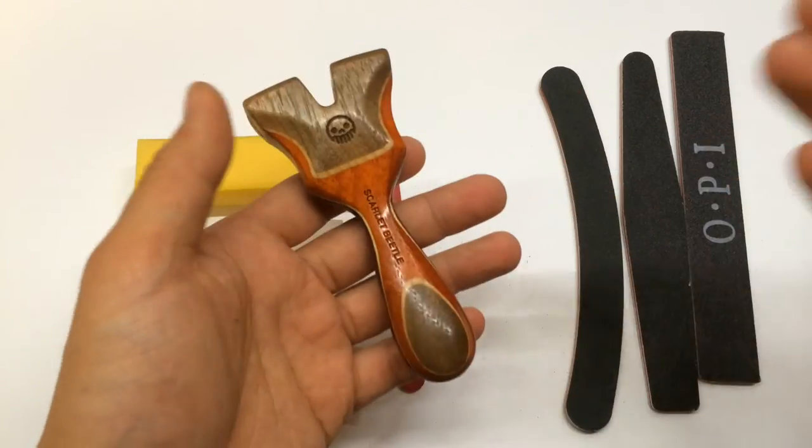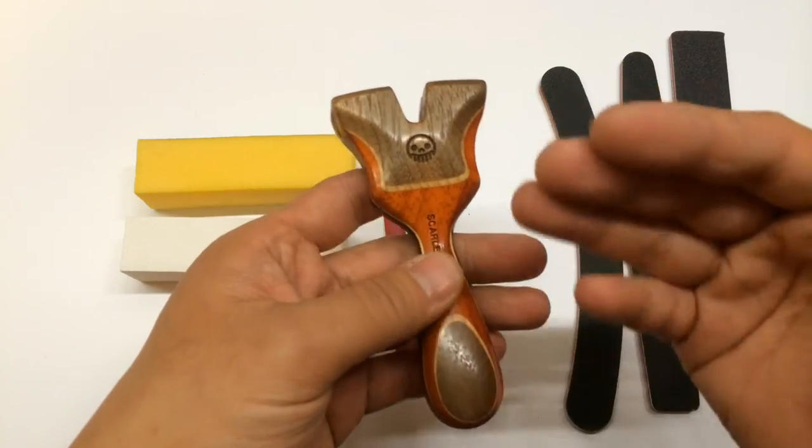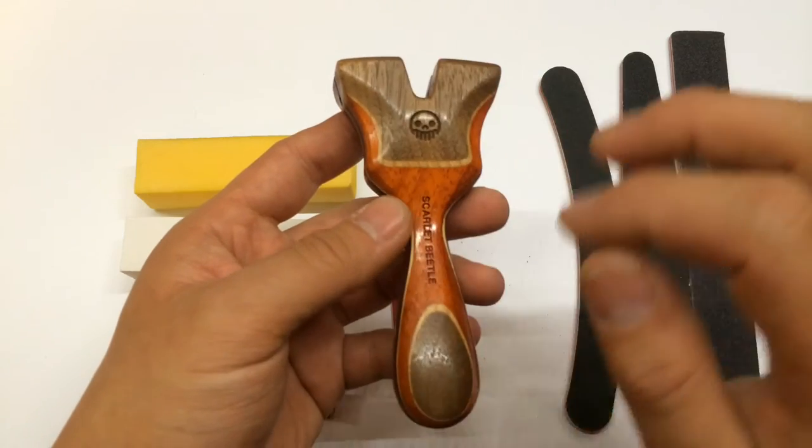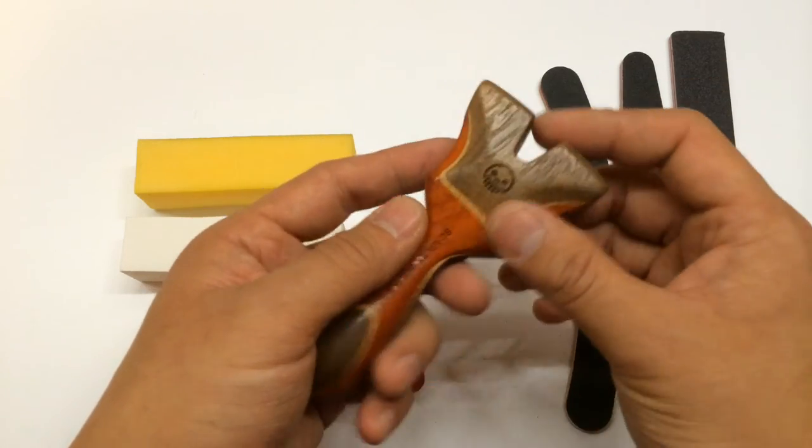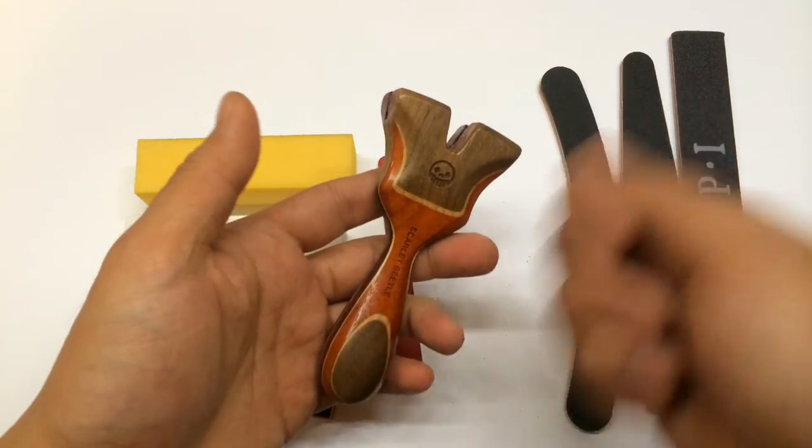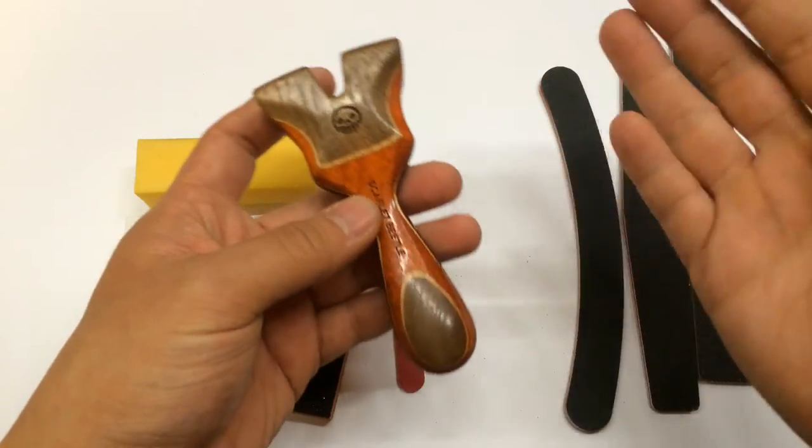Once that's done, I switch over to some 600 grit paper, which some people say it's a little too much, but I really like going that extra step. And then once that's done, I take some steel wool, some triple zero steel wool, and then go over the entire surface and prep it. And then I blow it off with some compressed air, and then it's off to paint.